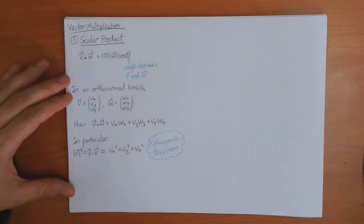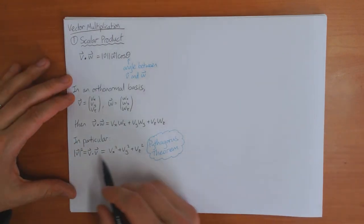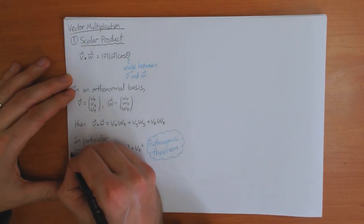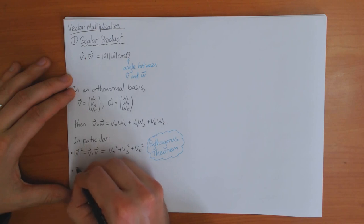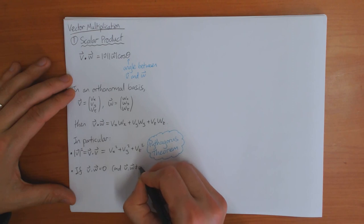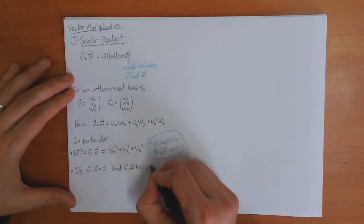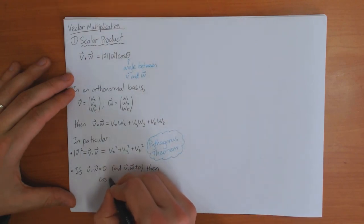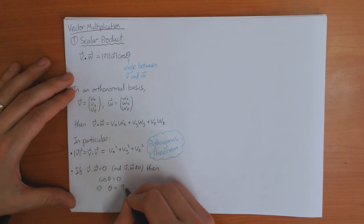Another important case is what does it mean if the dot product, the scalar product, is zero? So if v dot w equals zero, and we ignore the trivial case where one of the vectors is zero itself, then that must mean that cos theta is equal to zero. And cos theta equals zero means that the angle between them must be 90 degrees.